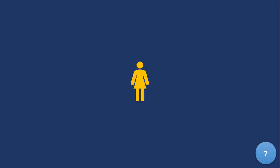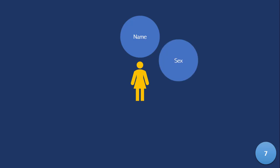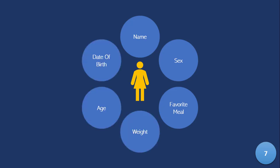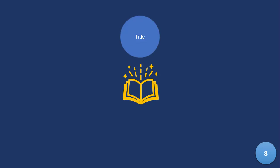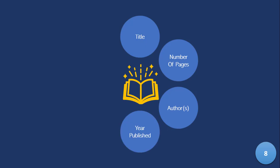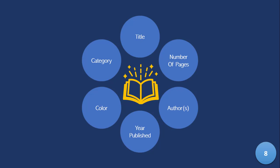This lady has a name which makes her different from others, she has a gender — female — a favorite meal, a weight, an age, and a date of birth. The book we saw earlier has a title, a number of pages — some have 300 pages, some just five — an author, and the year published. Some were published in 1960, others in 2020. It has a color and a category: fiction, science. All these things define the book and help differentiate one book from another.